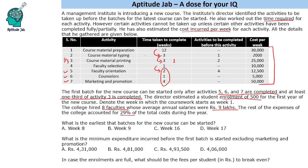That is not correct. If you include course material printing, that's 1 week, giving a total of 8 weeks. But you still cannot start on the 9th week because the course material printing activity is dependent on the material typing activity, which is dependent on the course material preparation activity. So we need 12 weeks for course material preparation, then 3 weeks for material typing, then only we can start printing — one more week. So we will need a total of 16 weeks to complete this part, since all mandatory activities must be done and one third is mandatory.